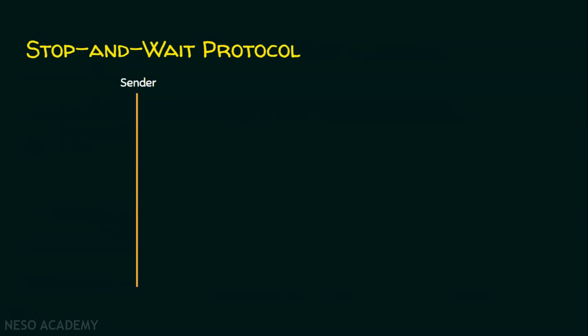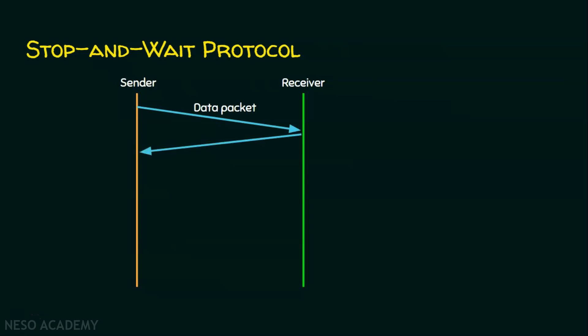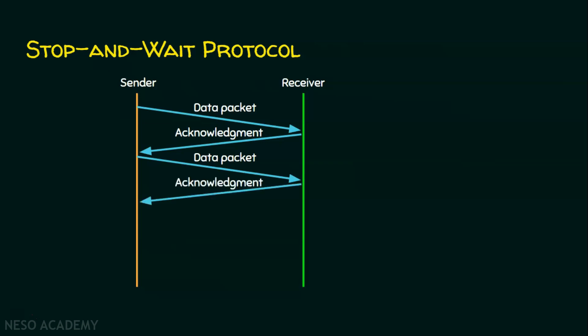Suppose there is a sender and a receiver. The sender will send exactly one data packet, and will not send any packet before receiving an acknowledgement. The receiver then sends the acknowledgement for the data packet it has received. After receipt of the acknowledgement, the sender sends the next packet. Once the acknowledgement is received for the next packet, the sender sends the following packet. This is the process of the stop and wait protocol.